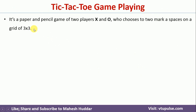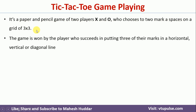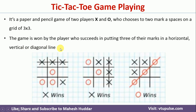Tic-Tac-Toe is a paper-pencil game where two players mark the spaces on a 3x3 grid. The player who succeeds in putting three marks horizontally, vertically, or in a diagonal line will be the winner.